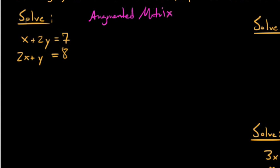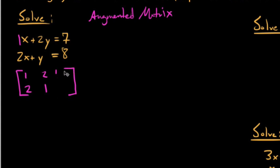Let's take a look at this first system: x plus 2y is 7, and 2x plus y is 8. The first thing we're going to do is write the augmented matrix corresponding to this system. The coefficients in the first row are 1 and 2, and in the second row 2 and 1. Sometimes people put a dotted line in the middle — I'm one of the ones that does not do that. This is our augmented matrix, and it's a 2×3 matrix because it has two rows and three columns.